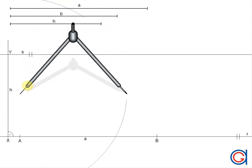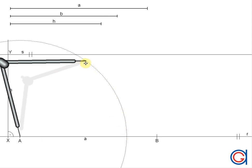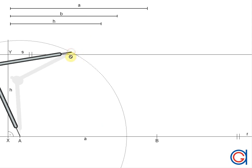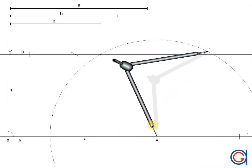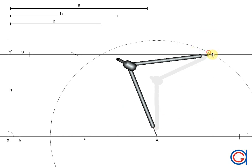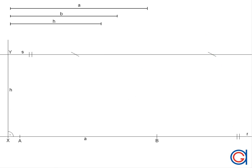Now setting our compass to the second side B, we set our compass on point A and we scribe an arc to the left until it cuts the horizontal line S at a new point which we will call D. And now with the same radius, setting our compass on point B, we scribe another arc cutting our horizontal line S at a new point C.